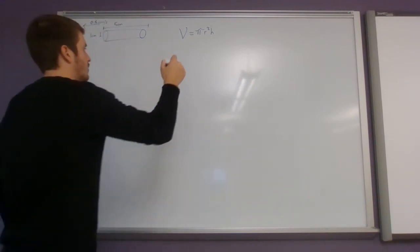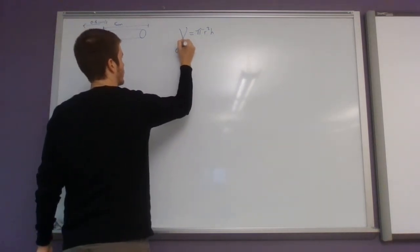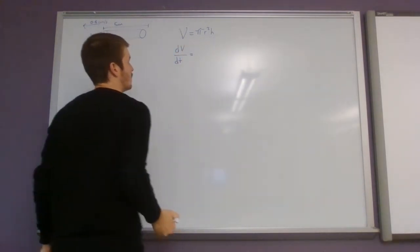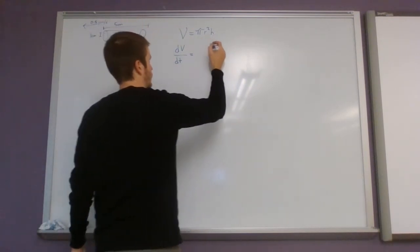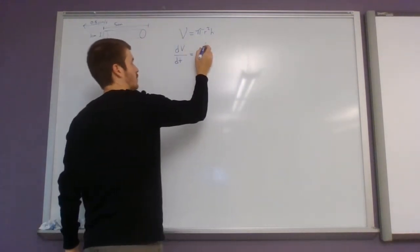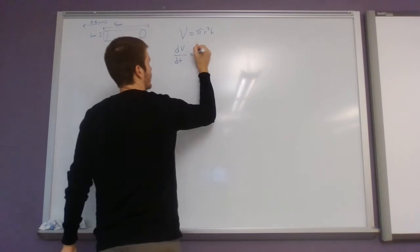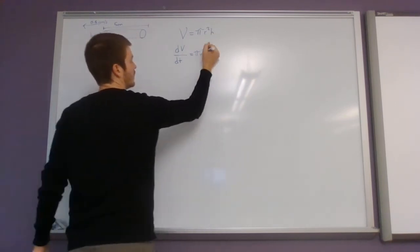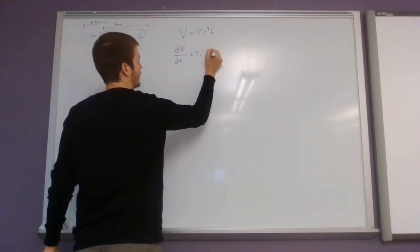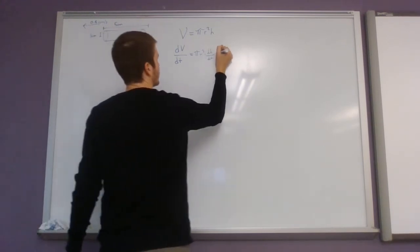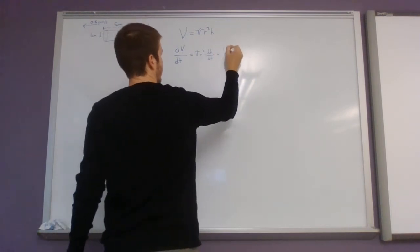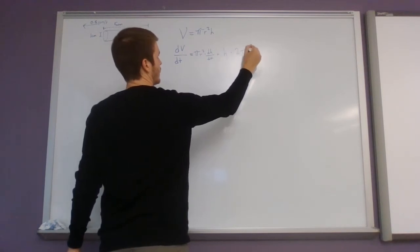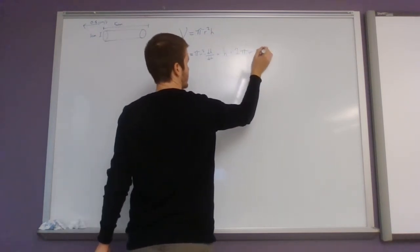All right, what I'm gonna do, I'm gonna take the derivative with respect to time. We're gonna have to do a little, not chain rule, sorry, we're gonna have to do a little product rule here. So pi r squared times dh dt plus h times 2 pi r dr dt.